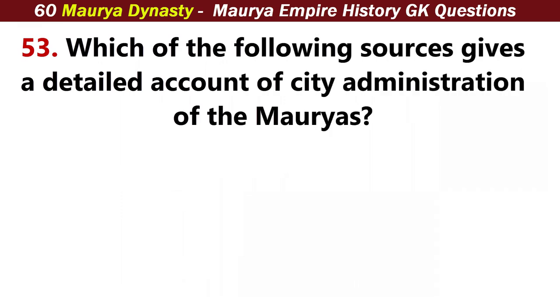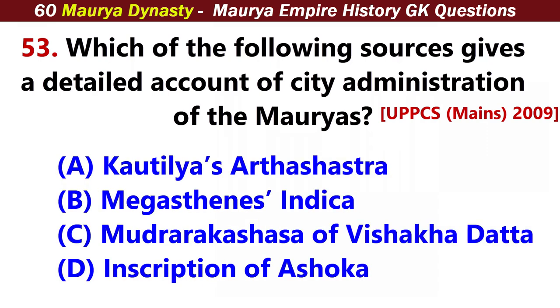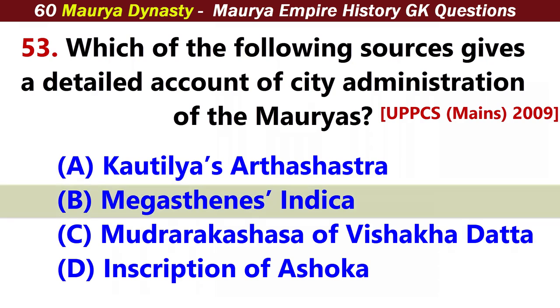Which of the following sources gives a detailed account of city administration of the Mauryas? Answer B: Megasthenes' Indica.